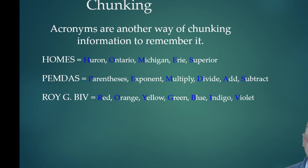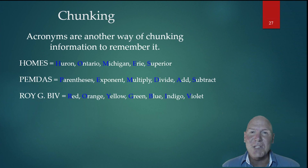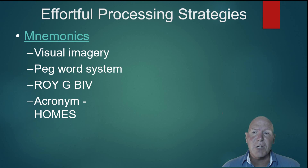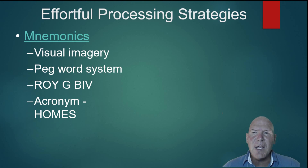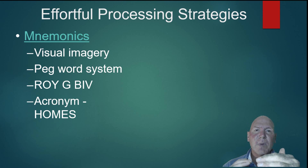Other examples of chunking you might be aware of: acronyms like HOMES for the Great Lakes, PEMDAS or BEDMAS for arithmetic operations, and ROYGBIV for the colors of the visible spectrum — the rainbow. Many of you remember those in order because of ROYGBIV. Some other effortful processing strategies: the term mnemonics refers to all of these things in a general sense. We can use visual imagery — picturing things makes them easier to remember because your brain works by association. We can also use a peg word system: one is a bun, two is a shoe, three is a tree — and we associate whatever is number one on our list with a bun, number two with a shoe, and so on.